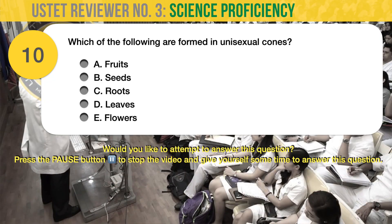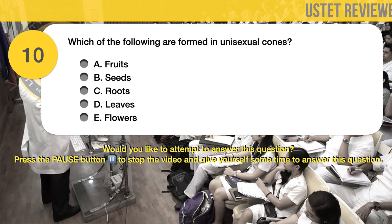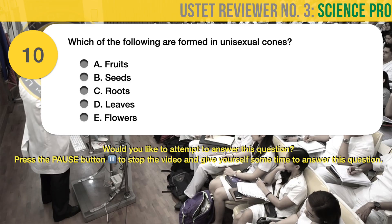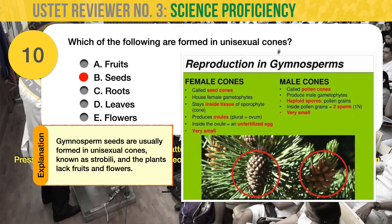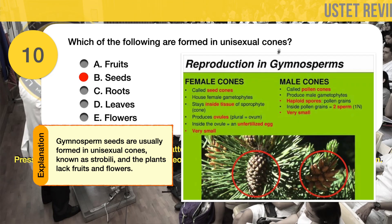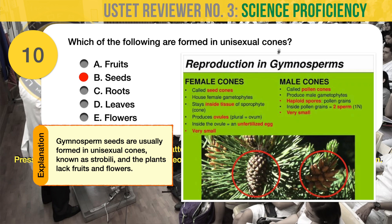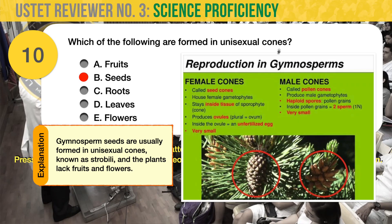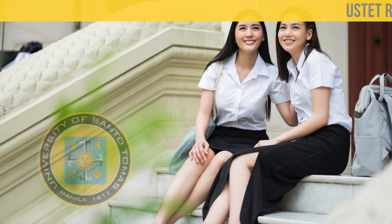Question number 10. Biology. Which of the following are formed in unisexual cones? A. Fruits. B. Seeds. C. Roots. D. Leaves. E. Flowers. The correct answer is B, seeds. Gymnosperm seeds are usually formed in unisexual cones known as strobili, and the plants lack fruits and flowers. A gymnosperm — literally 'naked seed' — is any vascular plant that reproduces by means of an exposed seed or ovule, unlike angiosperms whose seeds are enclosed by mature ovaries or fruits. The seeds of many gymnosperms are borne in cones and are not visible until maturity.